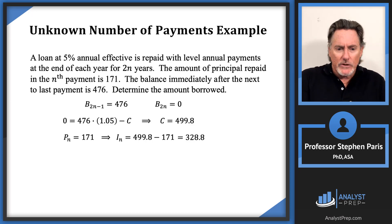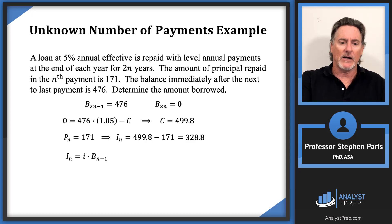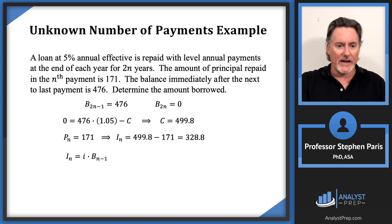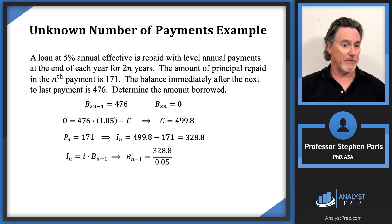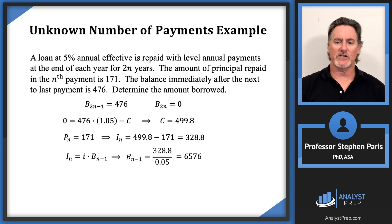The interest paid at time n equals the balance at time n−1 times the interest rate. So the balance at time n−1 is I_n / i = 328.8 / 0.05 = 6576.